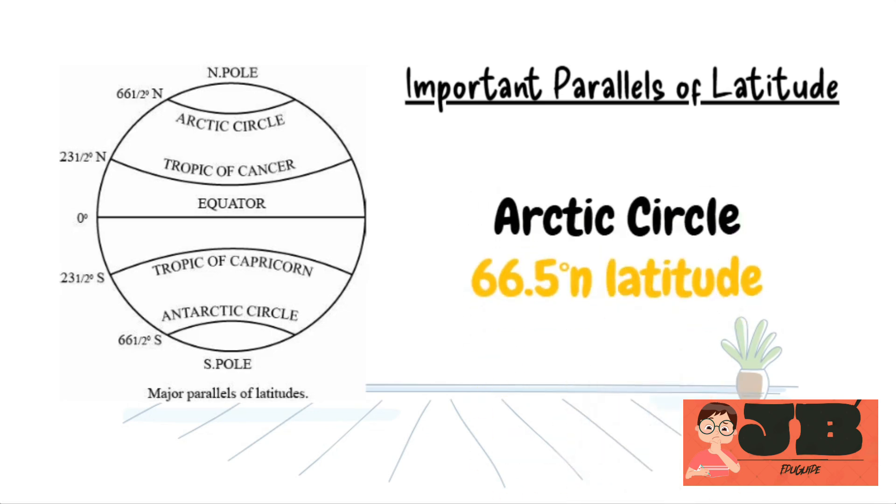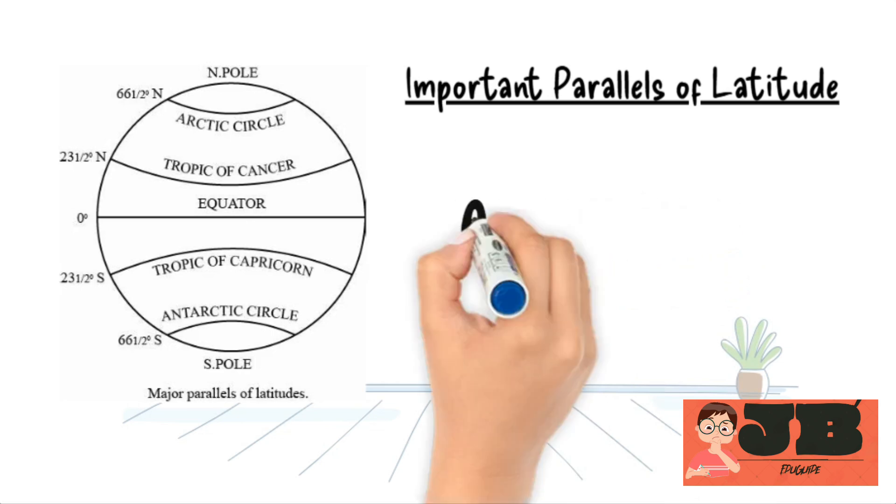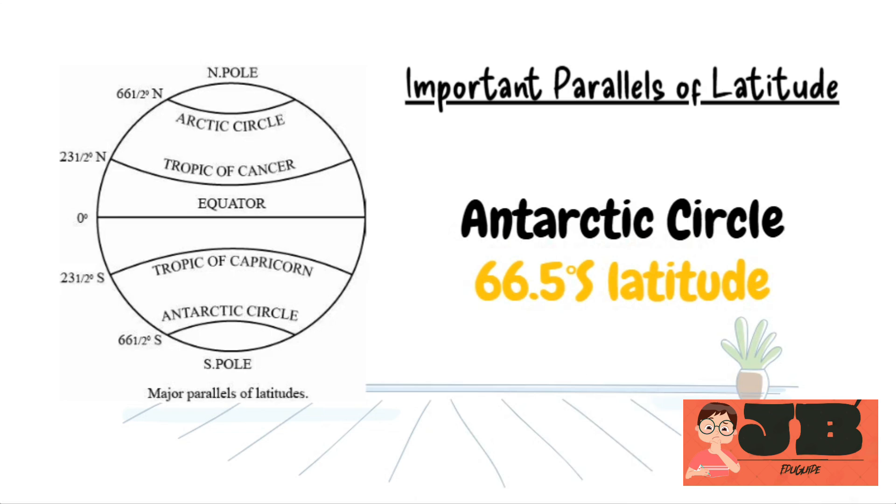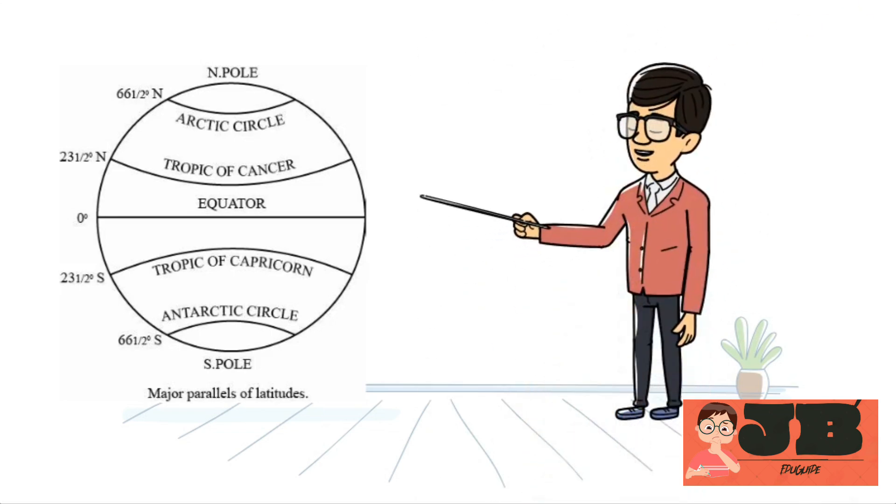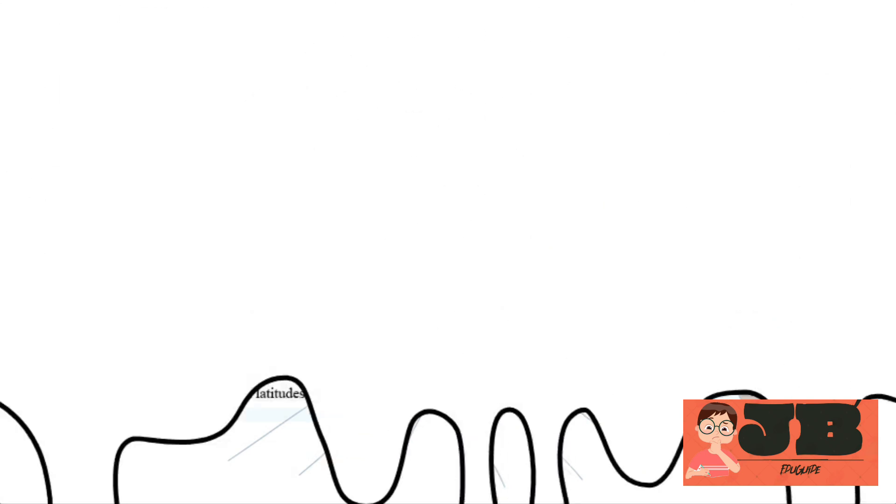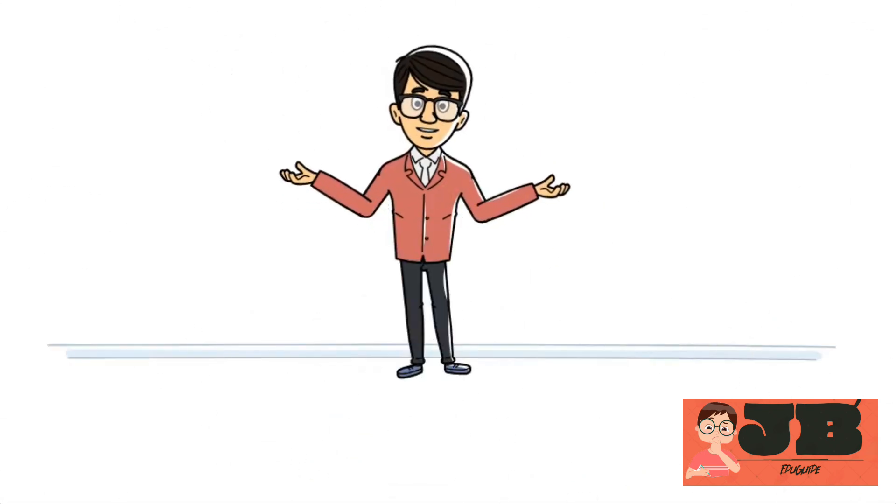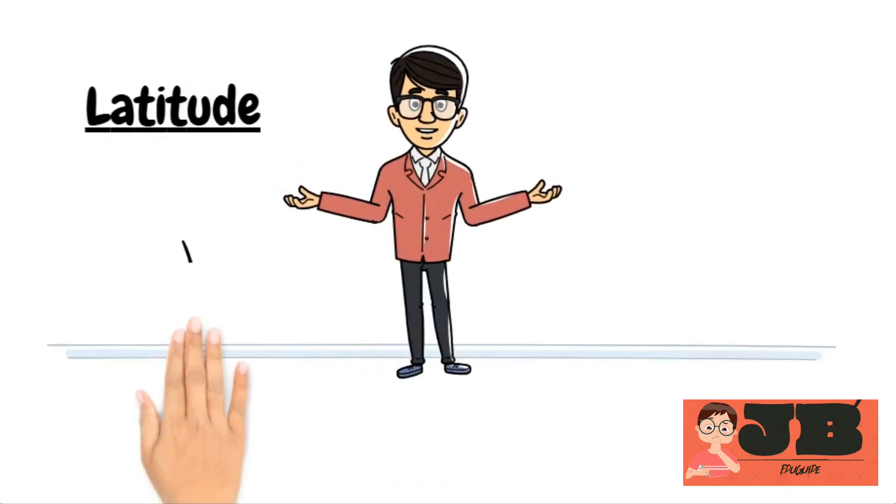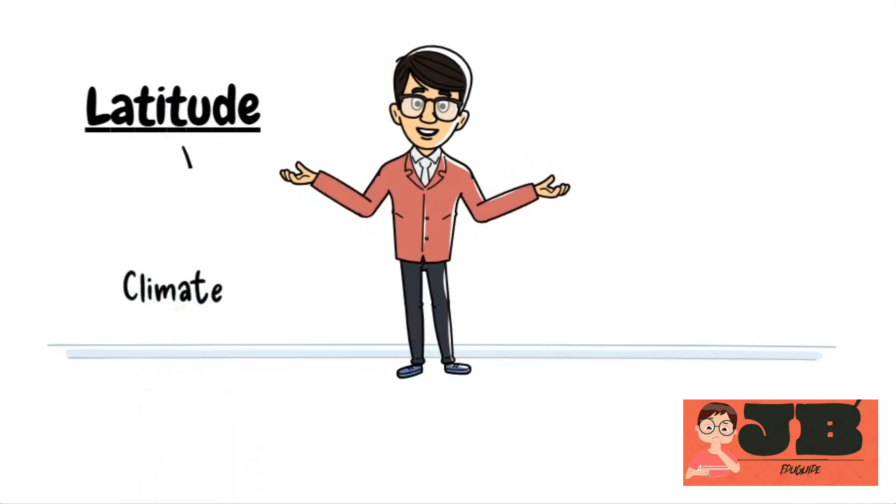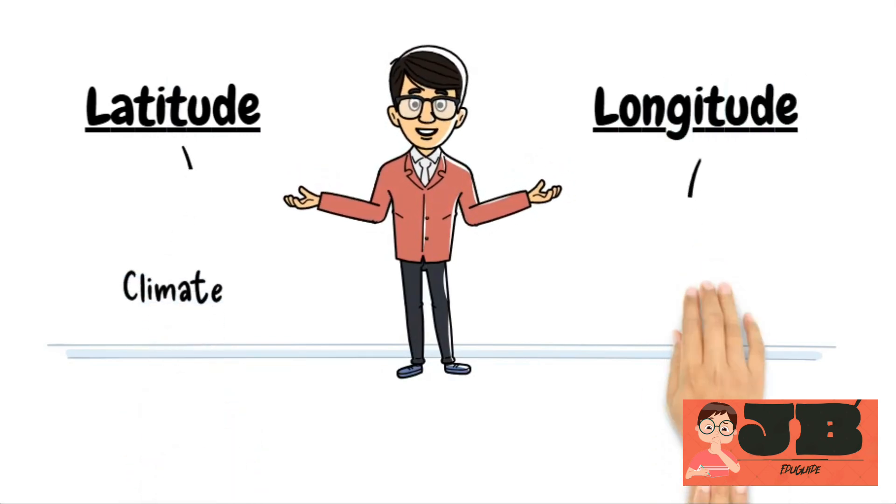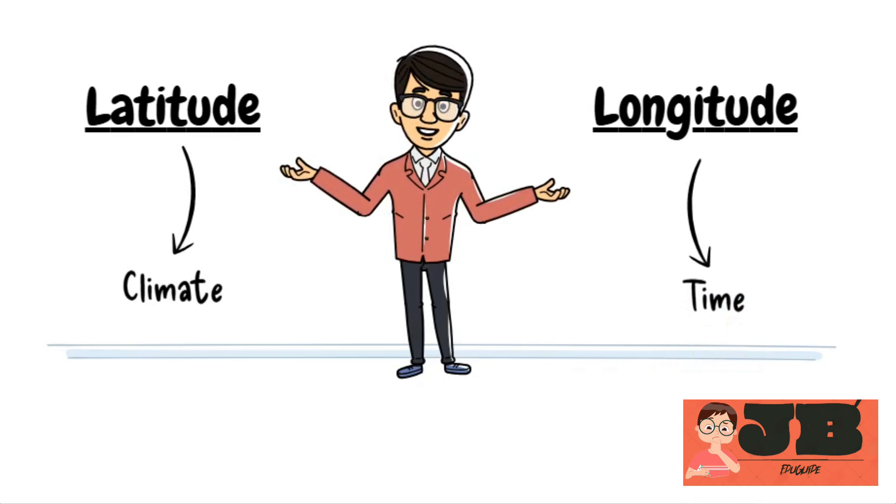Similarly, the Arctic Circle is at approximately 66.5 degrees north latitude, and the Antarctic Circle is at approximately 66.5 degrees south latitude. You can see the diagram. Dear students, do you know latitude represents climate, whereas longitude represents time. So let's move to climate zones.